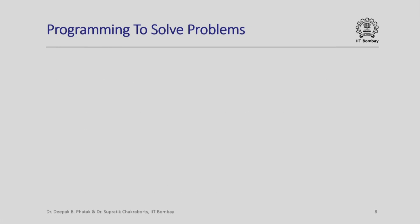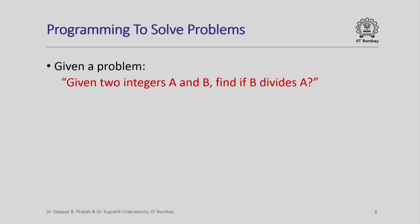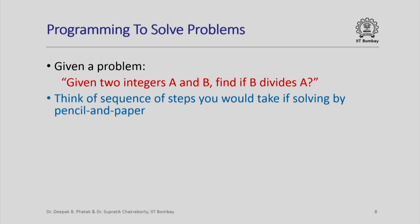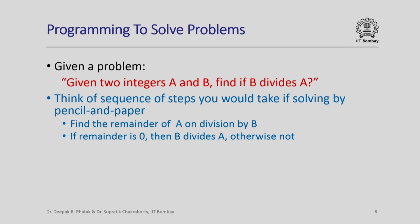Having seen how statements execute sequentially, let us quickly try to see how we might use programming to solve some simple problems. Suppose we are given two integers a and b and need to find out if b divides a. The first thing to do is forget about computers and just think of the sequence of steps you would take solving this problem by pencil and paper. One way: find the remainder of a on division by b — if the remainder is 0 then b divides a, otherwise b does not divide a.